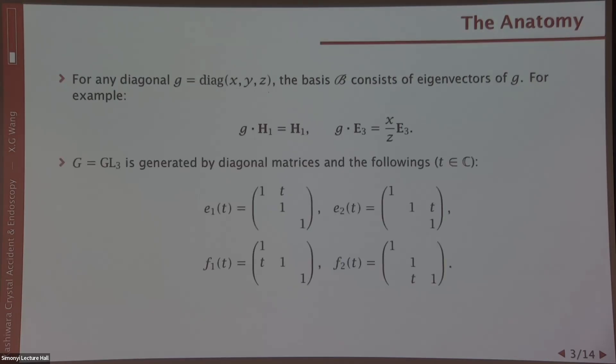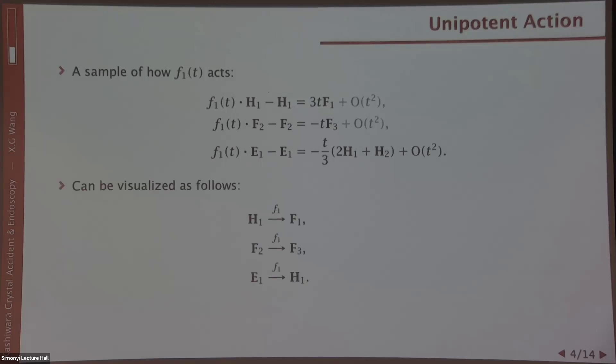G generally, aside from diagonal matrices, also has these upper or lower triangular matrices, and T here is a complex parameter. For example, we can take F1 of T. These are some examples. You can easily compute the action, and we organize the result on the right hand side according to the order of T appearing. These results can be visualized in the following way, like a diagram.